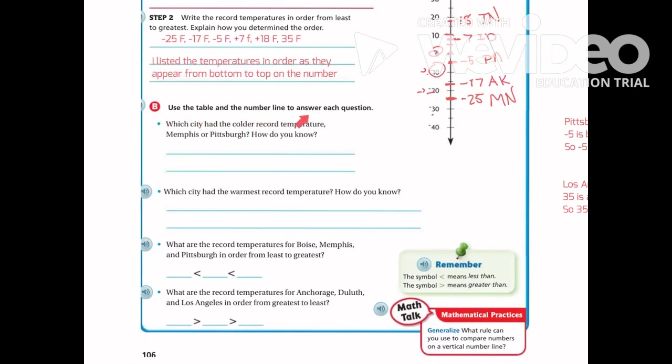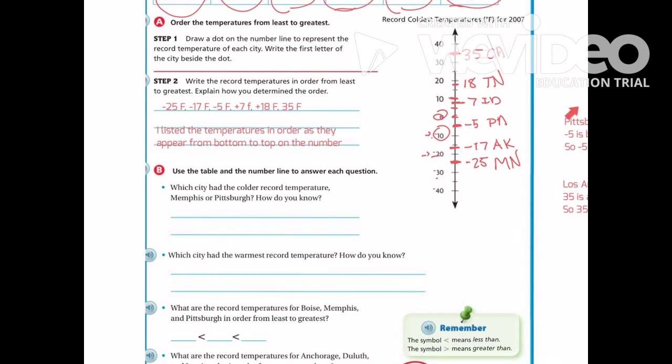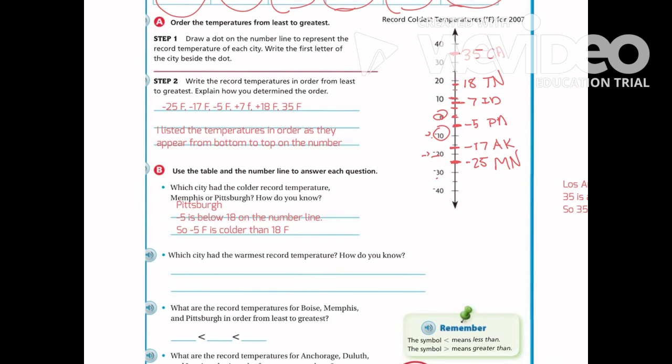Using the table and number line to answer questions: which city had the colder record temperature, Memphis or Pittsburgh? Memphis is at positive 18 and Pittsburgh is at negative 5. Negative 5 is below 18 on the number line, so Pittsburgh had the colder temperature.